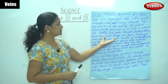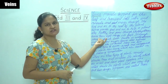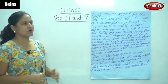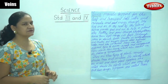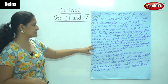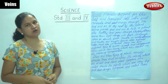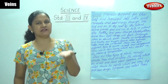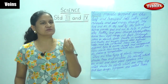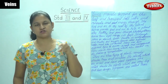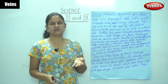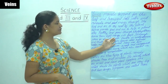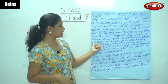Through photosynthesis, leaves turn light energy into food. Through pores or stomata, leaves breathe in carbon dioxide and breathe out oxygen. On the underside of the leaves, there are tiny holes present called stomata. These stomata breathe in carbon dioxide and breathe out oxygen.